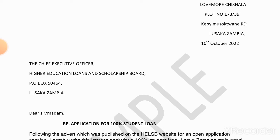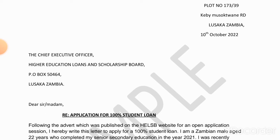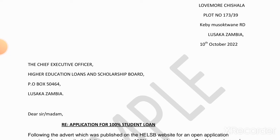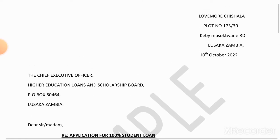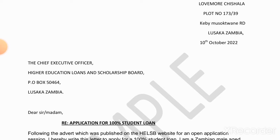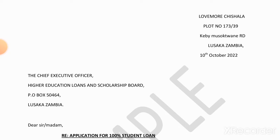The second part is the address of the receiver — the recipient. This is the address of the Chief Executive Officer of the Higher Education Loans and Scholarship Board. If we check the advert which was just released by the education board, we can see that the letter must be addressed to the Chief Executive Officer through the details provided. Always make sure you use a correct address for the recipient.